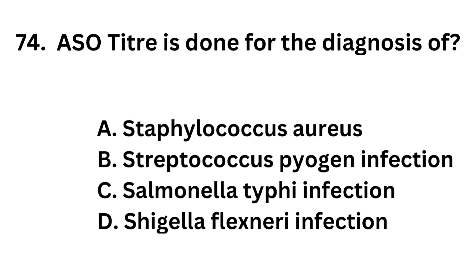Question number 74. ASO titer is done for the diagnosis of: Option A, Staphylococcus aureus; Option B, Streptococcus pyogenes infection; Option C, Salmonella typhi infection; Option D, Shigella infection.